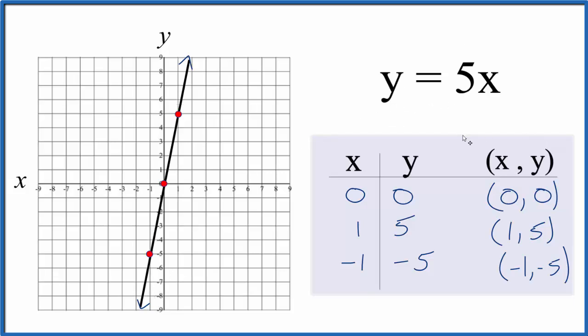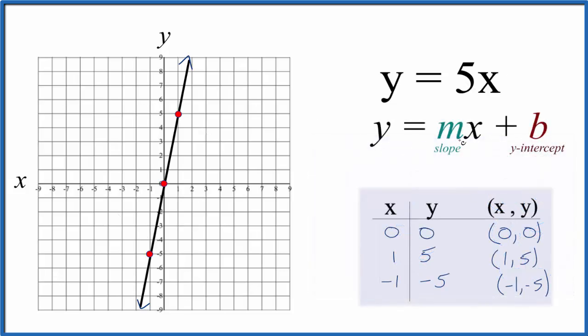So let's use the slope-intercept formula just to make sure we have the right graph. We have y equals mx plus b. m is the slope, b is the y-intercept, except we don't have a y-intercept. We have a slope here, but not a y-intercept. So we're just going to say plus 0, because that won't change anything in our equation.